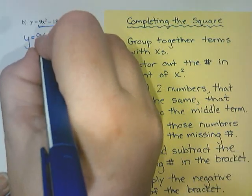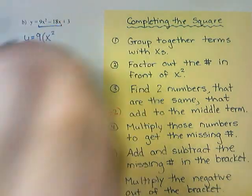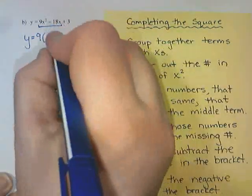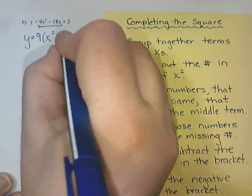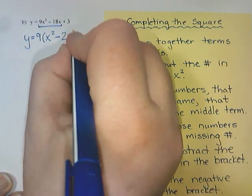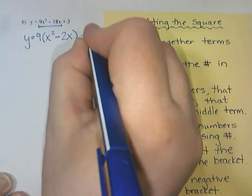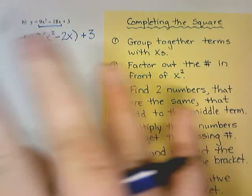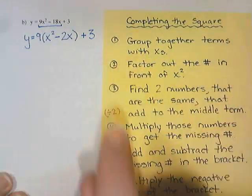So 9x² divided by 9 is 1x² or just x². Negative 18 divided by 9 is -2 and then it has an x. And then that plus 3 we do not divide by 9. It is patiently waiting for everything else to happen before it gets its turn.